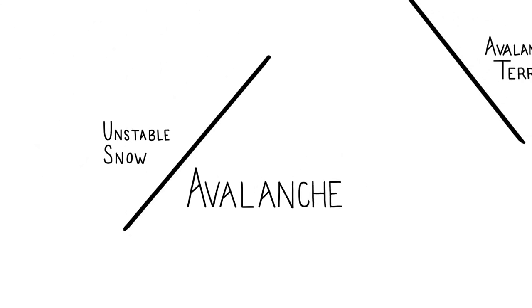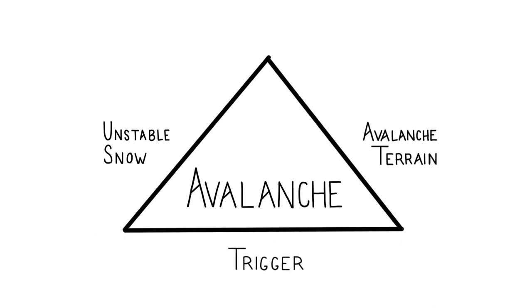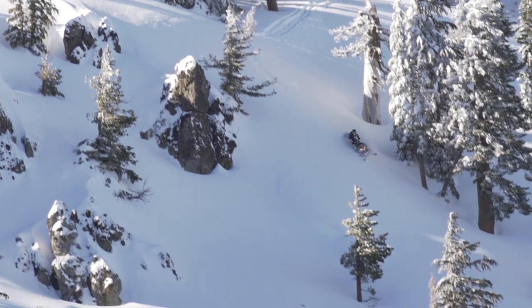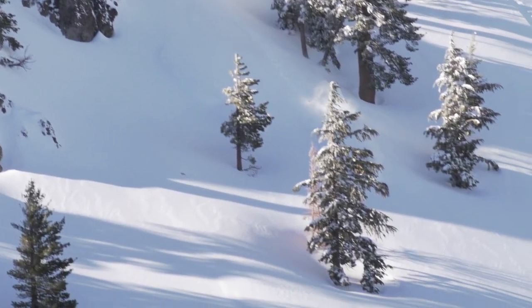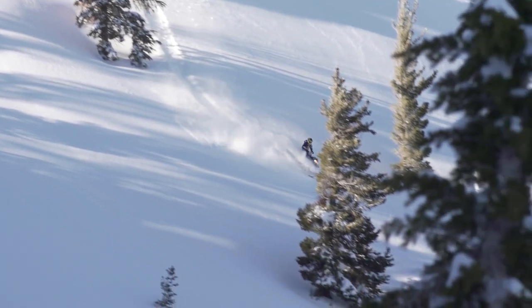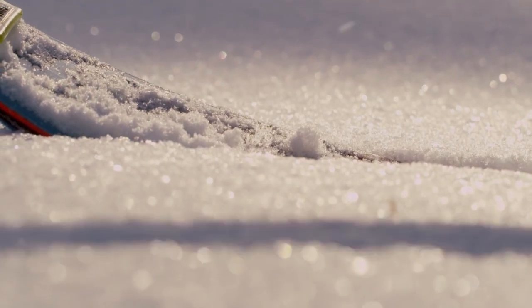You need three ingredients to have an avalanche: unstable snow, a trigger, and avalanche terrain. Removing any one of these ingredients eliminates the possibility of an avalanche. We can't influence the stability of the snow, and if we are in the mountains we can assume we can always be a trigger. So choosing where we go is our primary tool for managing avalanche risk.